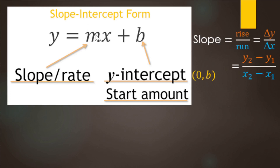Quick wrap-up: in slope-intercept form, the coefficient in front of your independent variable — the number being multiplied by x — is your slope or rate. We call it slope for generic coordinate points or a graph, and rate when we have a word problem. The constant term b is your y-intercept on a generic problem, or the start amount in a word problem. Remember the y-intercept always has x equal to zero. And slope is rise over run — change in y over change in x, using the Greek letter delta for 'change in.' You can also use the slope formula.